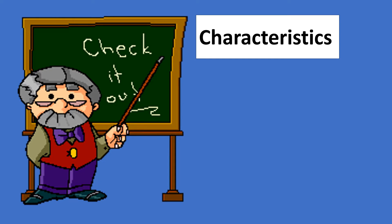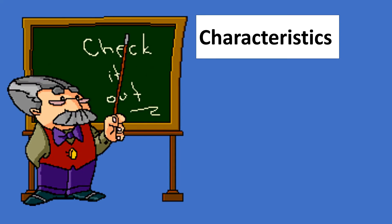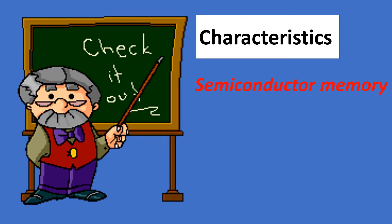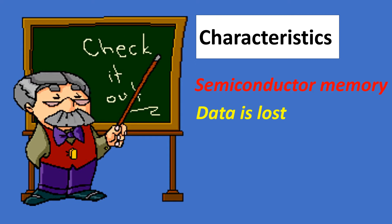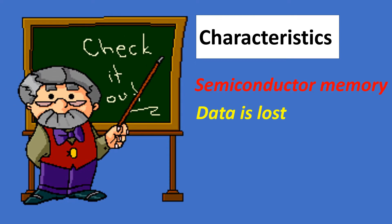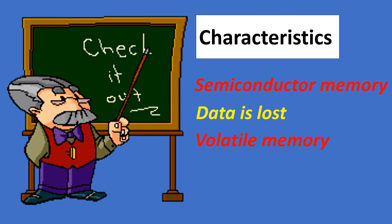Characteristics of main memory: These are semiconductor memories. Data is lost when power is switched off. It is usually volatile memory.